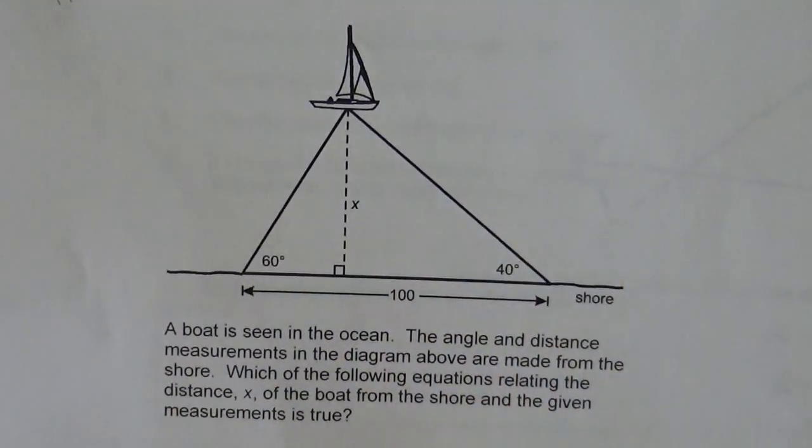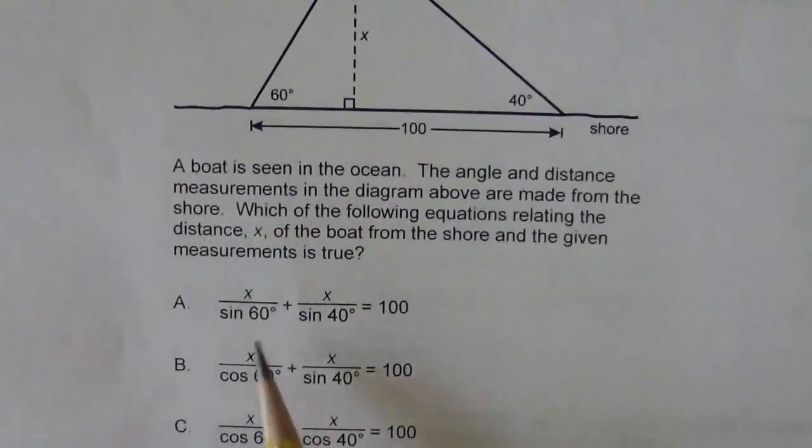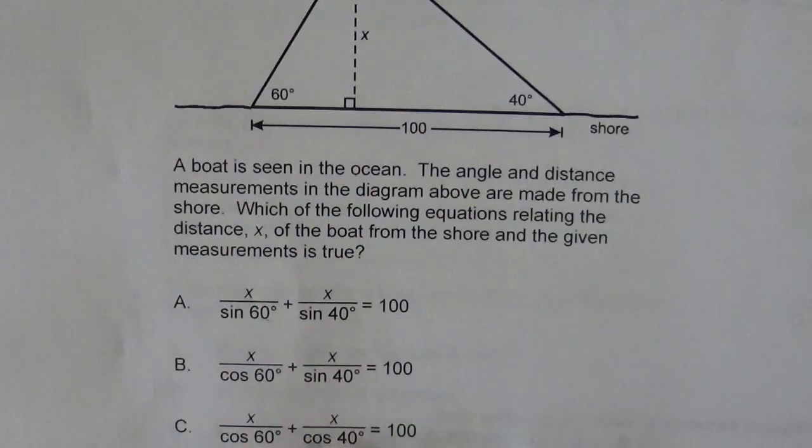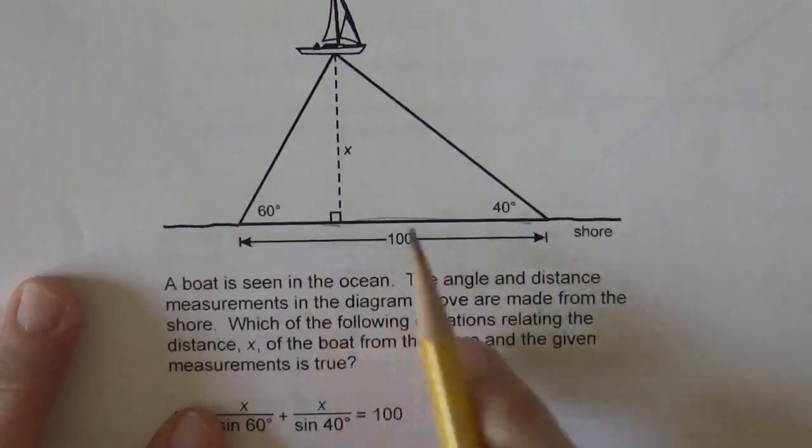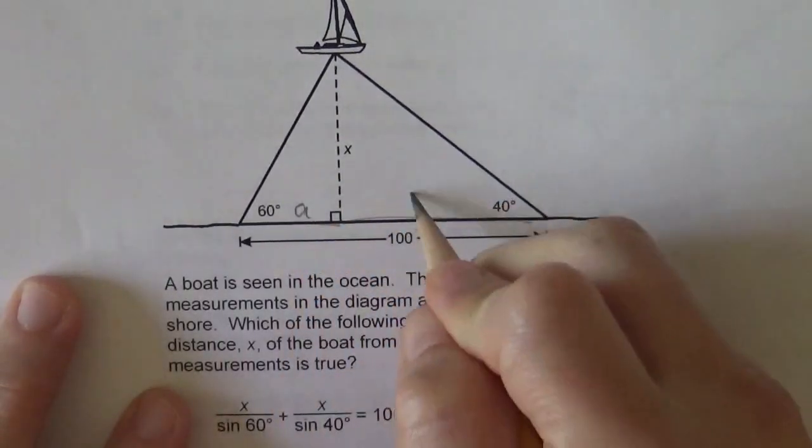Okay, so looking at my answer choices, it looks like I have something plus something equals 100 for all these. And looking at my problem, I know this plus this equals 100. So I'm going to call this A and this B.